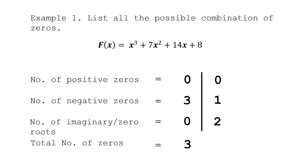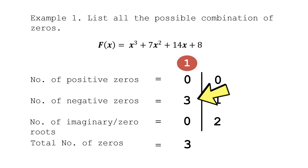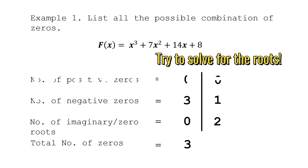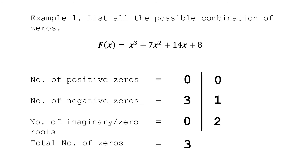The total number of zeros is still 3 in both combinations. In the first combination, we have no positive zeros, 3 negative zeros, and no imaginary or zero roots. In the second combination, we have no positive zeros, 1 negative zero, and 2 imaginary or zero roots. Once you have the possible combinations, it is useless to try positive values of x — just go directly with negative values to find which are the actual zeros of your function.